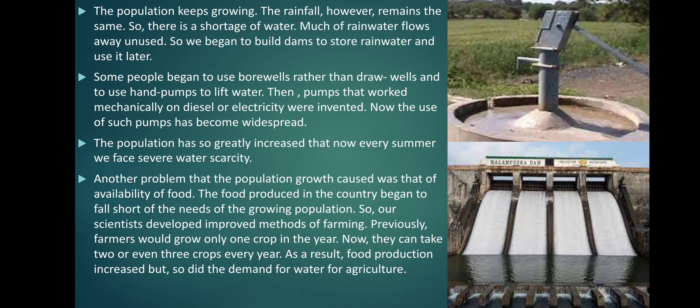The population has so greatly increased that now every summer we face severe water scarcity. Another problem that population growth caused was the availability of food. The food produced in the country began to fall short of the needs of the growing population, so our scientists developed improved methods of farming. Previously farmers would grow only one crop a year; now they can take two or even three crops every year. As a result, food production increased but so did the demand for water for agriculture.